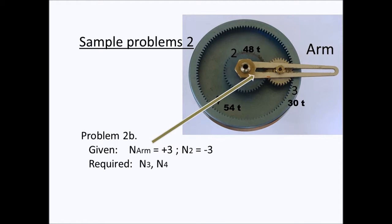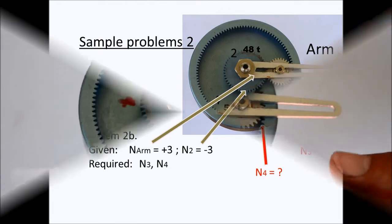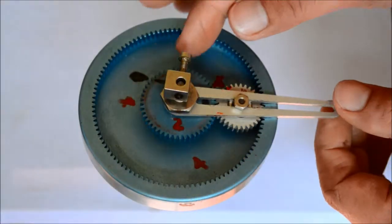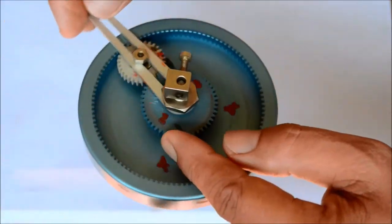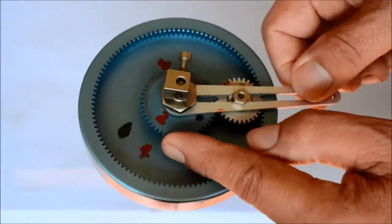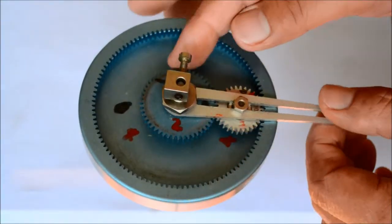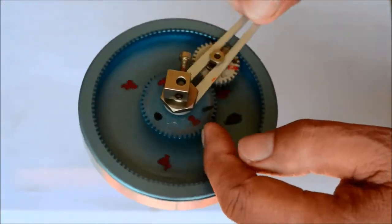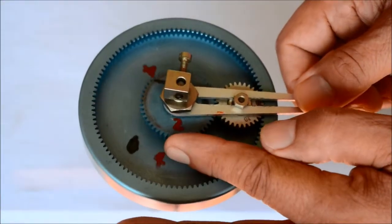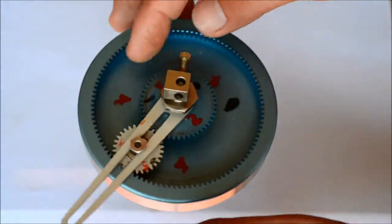For the next problem, the arm rotates plus three and gear two rotates negative three. We have to find the number of rotations of gear three and gear four. We can see the mechanism operating in that particular condition — the arm rotates three times in the positive direction and gear two rotates three times in the negative direction.